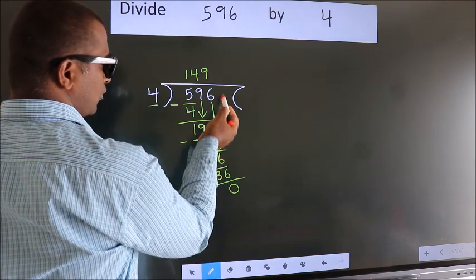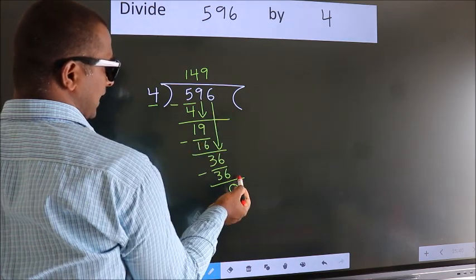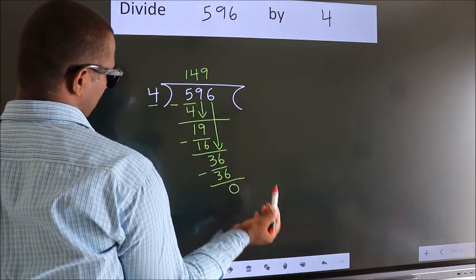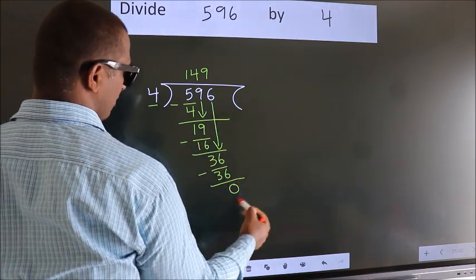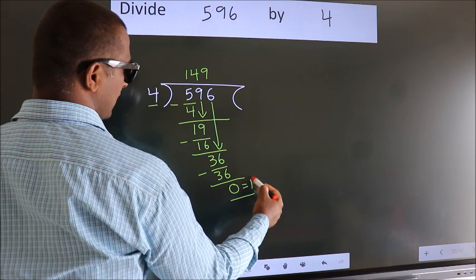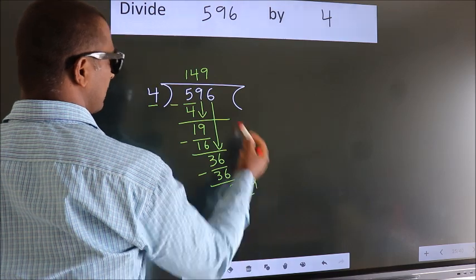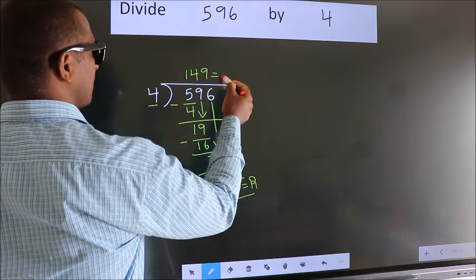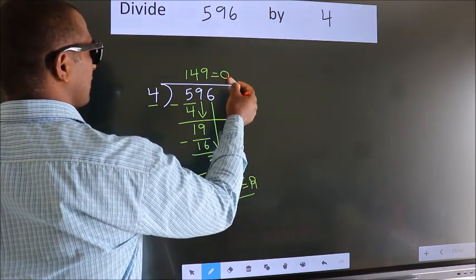No more numbers to bring down, so we stop here. This is our remainder. This is our quotient — 149.